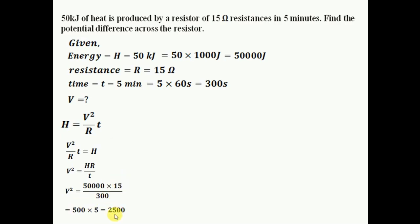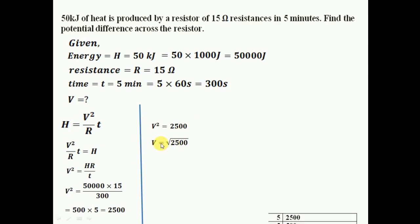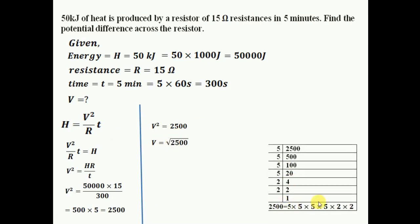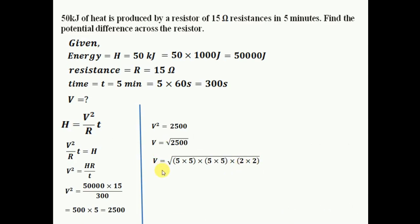V squared is 2500, but I need V, not V squared, so I'll take the square root. Factorizing 2500: 5 times 5 times 5 times 2 times 2 equals 2500. Taking one number out of each pair: one 5 goes out, another 5 goes out, and one 2 goes out. So 5 times 5 times 2 times the square root of 1 equals 50. Therefore V equals 250 volts.